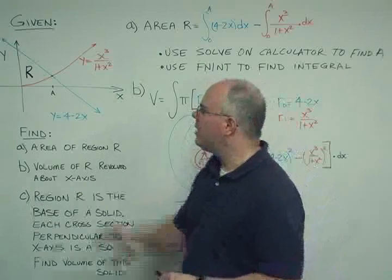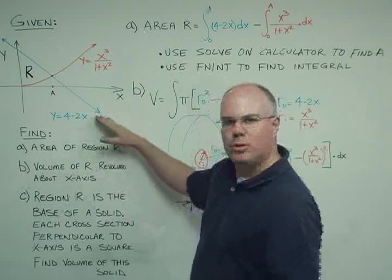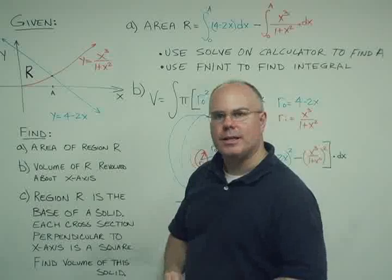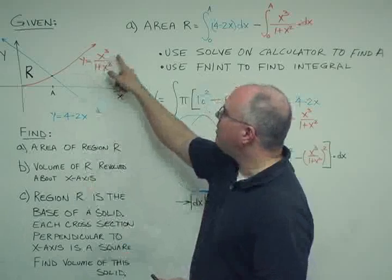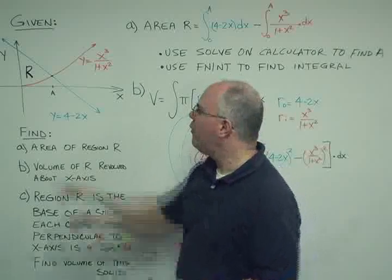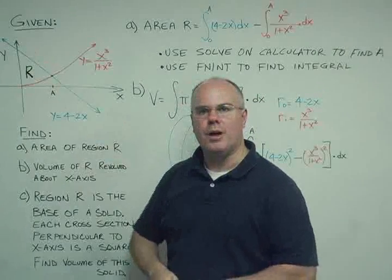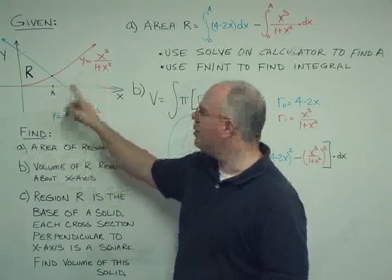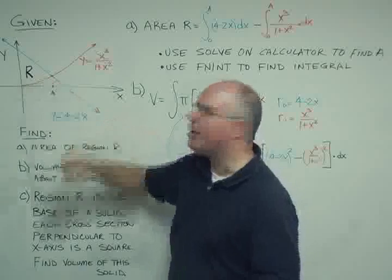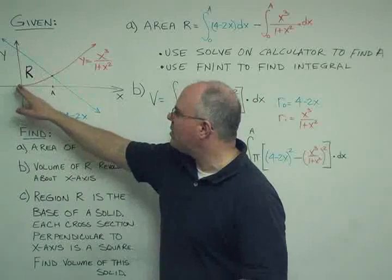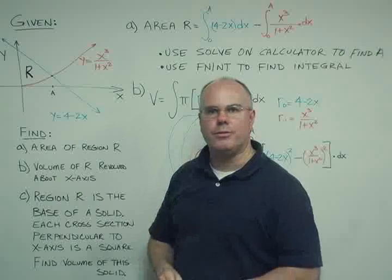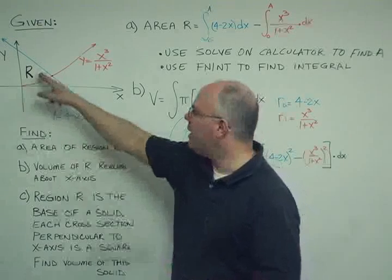We're given two curves. In black we have our x and y axes, then in blue a curve y equals 4 minus 2x, a negatively sloped line. We've got a second curve y equals x cubed divided by 1 plus x squared that looks something like a parabolic shape. Those two curves form a region R. The two curves intersect at point A and our first task is to find the area of this region R.